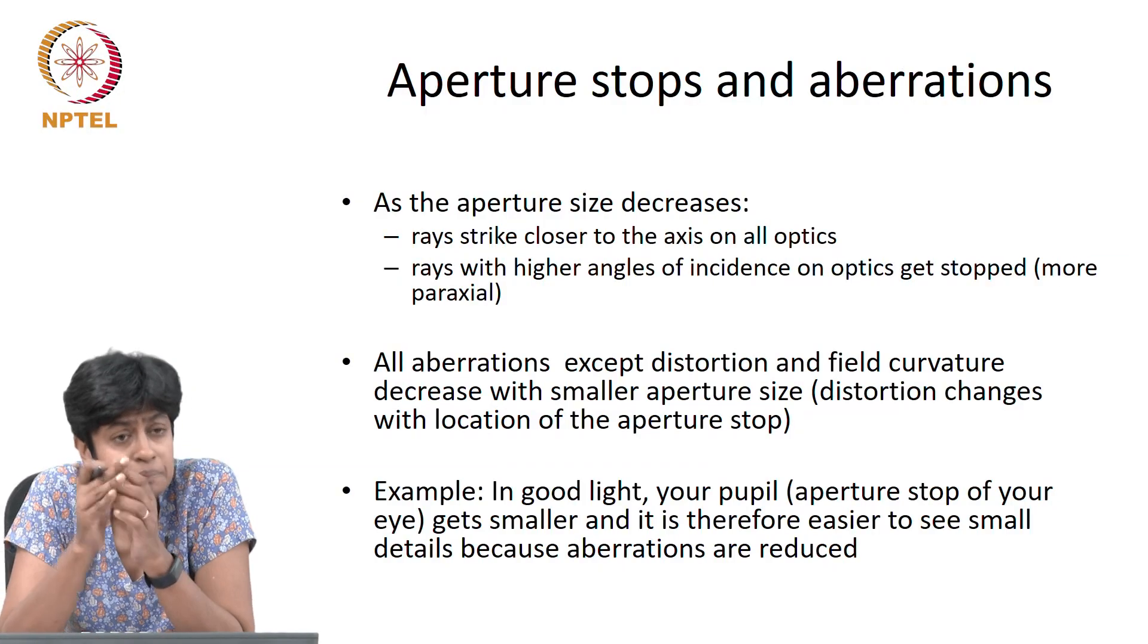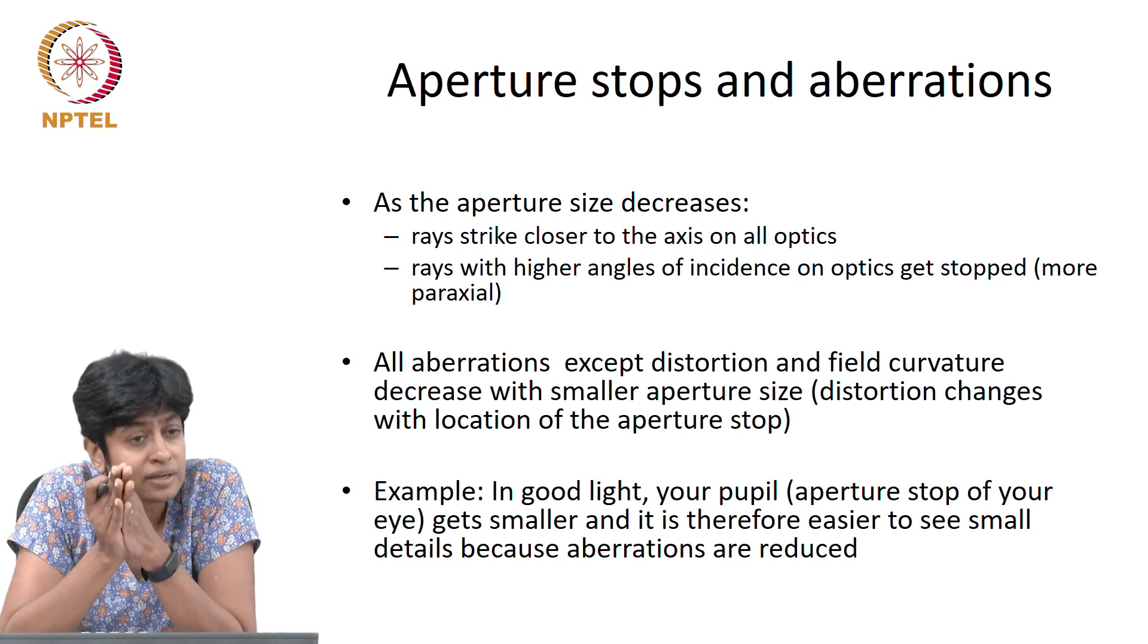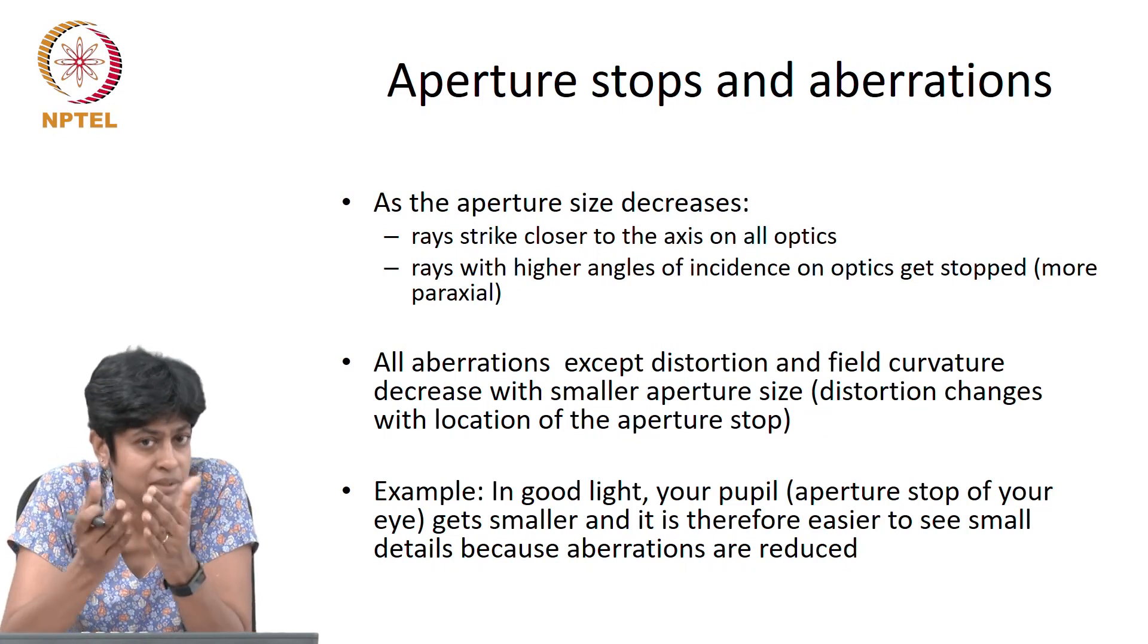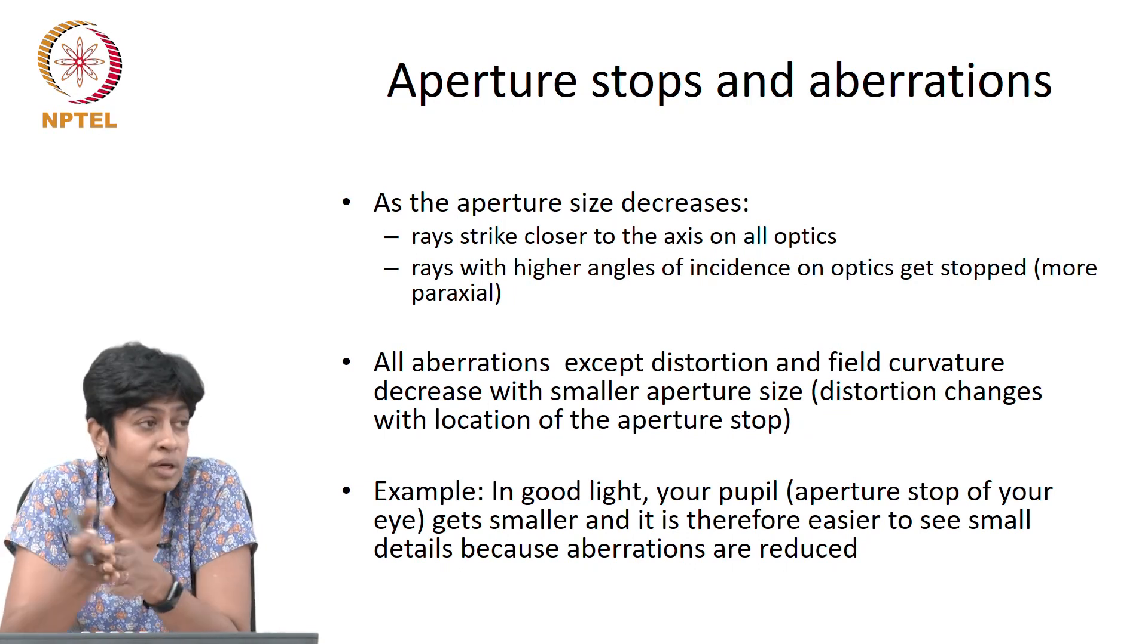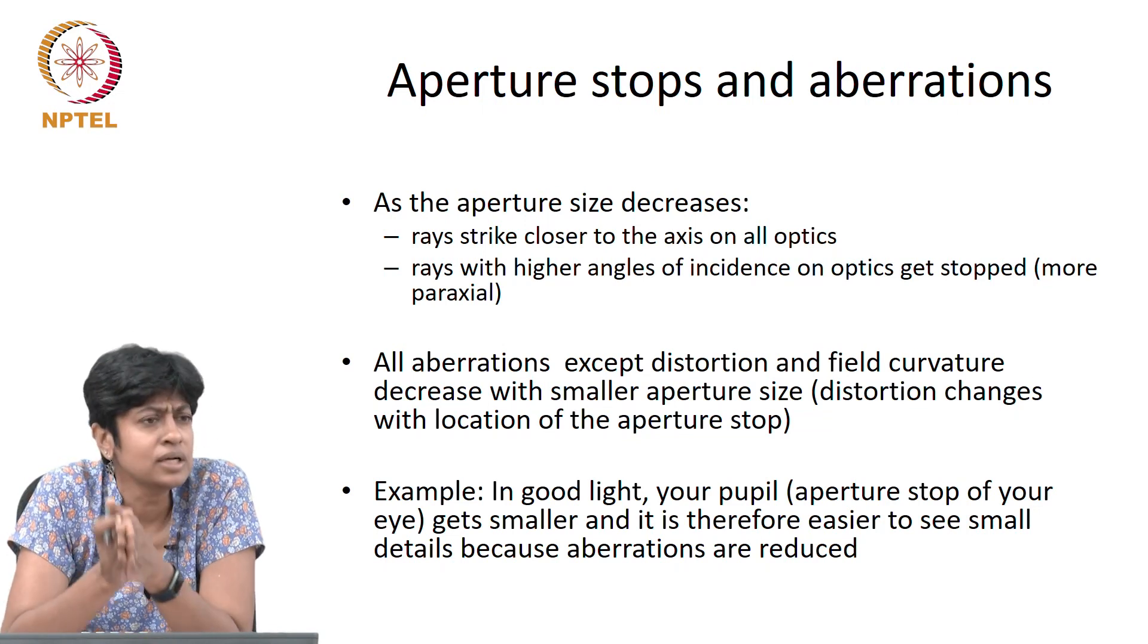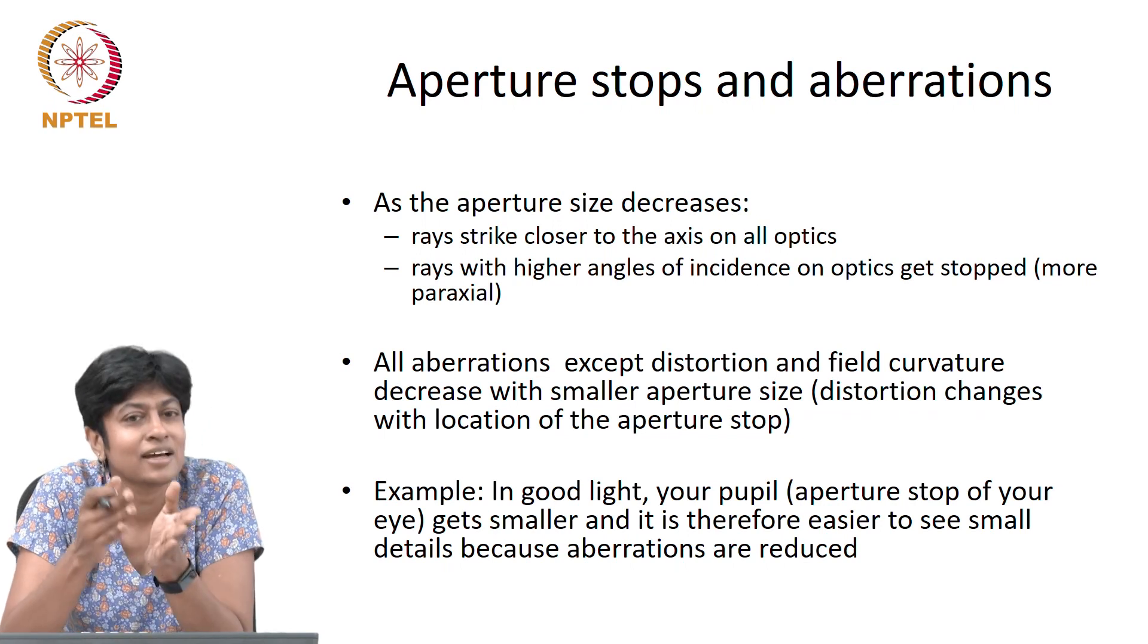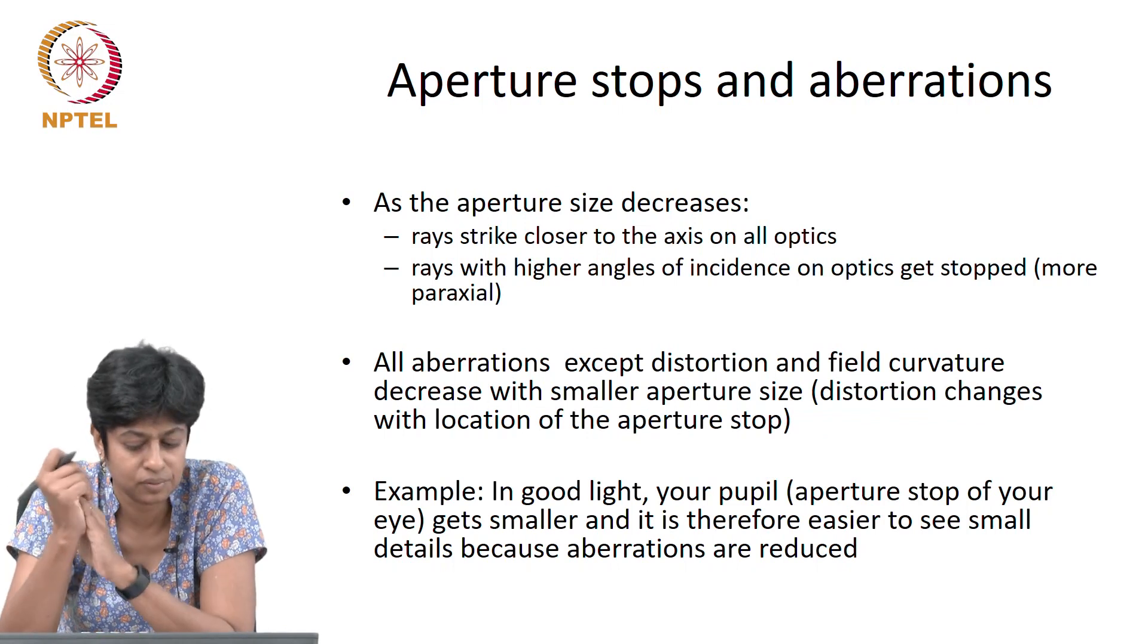So, we saw that as the aperture size decreases, you are capturing rays that are closer and closer to the optical axis. Your paraxial approximation is getting more accurate, and we discussed the pinhole camera yesterday where we said you really have only axial rays and it has an infinite depth of field. However, it has very, very less light going through it and so there are all the implications that come with that.